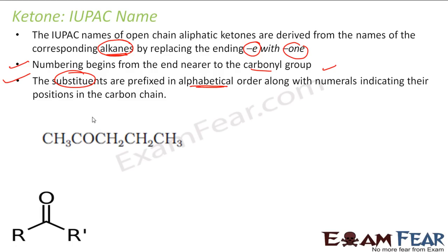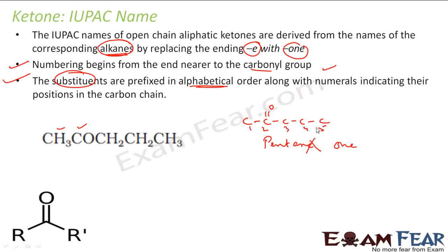For example, take this compound. I draw the structure: it has 5 carbons, and the second carbon has the oxygen (carbonyl group). 5 carbons means 'pent', so it's derived from pentane. I number the chain: 1, 2, 3, 4, 5 — the carbonyl group gets position 2. Numbering the other way gives position 4, which is not correct since we need the lesser number. So the IUPAC name is pentane-2-one.